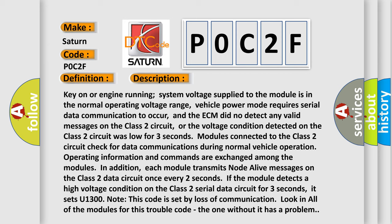In addition, each module transmits a node alive message on the Class 2 data circuit once every two seconds. If the module detects a high voltage condition on the Class 2 serial data circuit for three seconds, it sets U1300. Note this code is set by loss of communication. Look in all of the modules for this trouble code; the one without it has a problem.